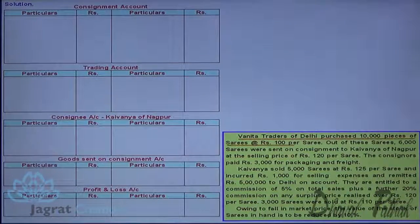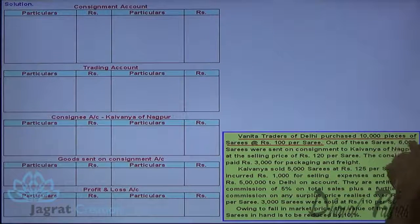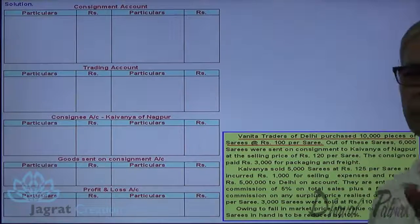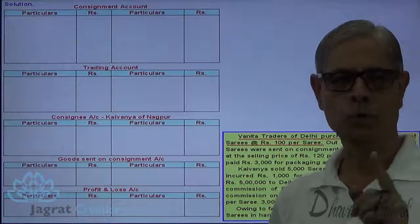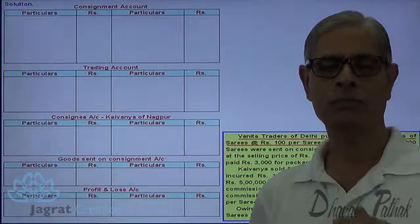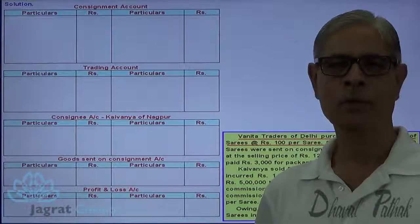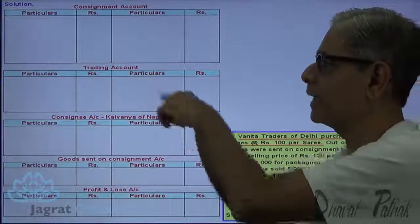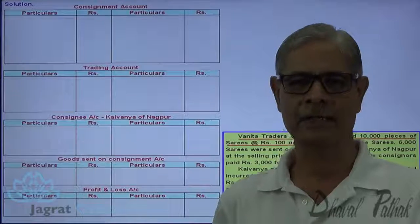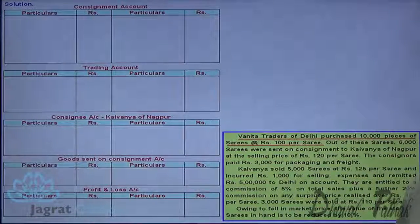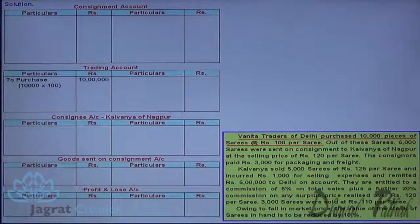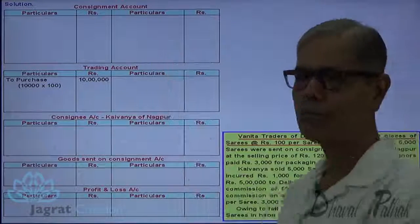First transaction: 10,000 pieces of sarees at ₹100 each. 10,000 into 100 — purchases are ₹10 lakhs. The normal entry is: Purchase account debit to bank or creditor account credit. But all purchases are debited to the trading account at the end of the year, so I am going to debit these purchases to the debit side of trading account. The adjustment entry is: trading account debit to purchases account credit — ₹10 lakhs.